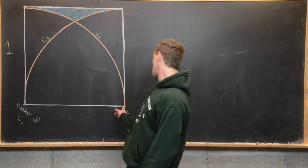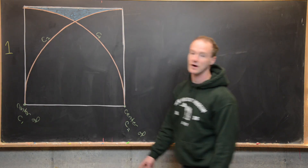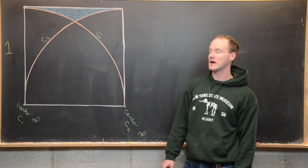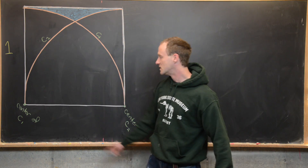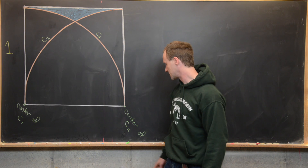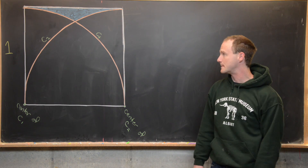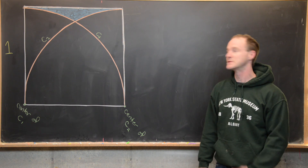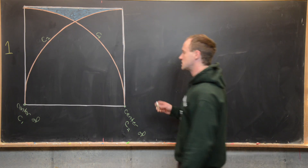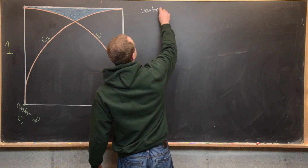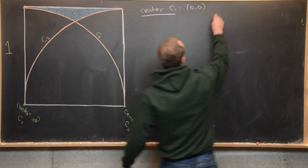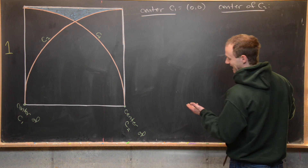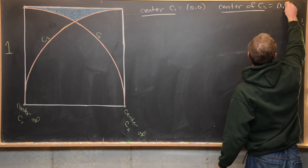We've got C1 going from this vertex to this vertex with the center over here, so the radius of C1 is one and the center is the bottom left vertex of the square. Then we've got C2, which goes from this vertex up to this vertex and its center is over here, so that also has radius one. For the calculus method, let's put this into a coordinate system: the center of C1 is the origin, and the center of C2 is at the point (1, 0).